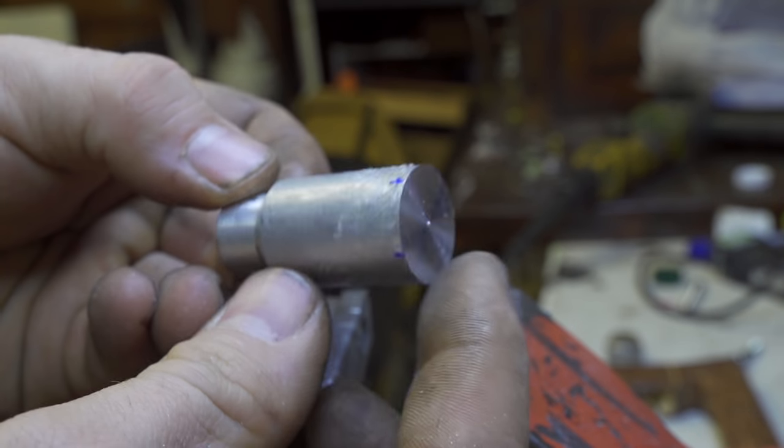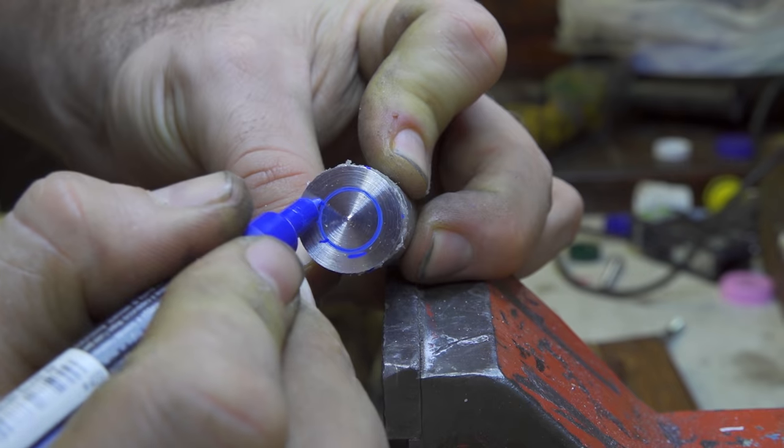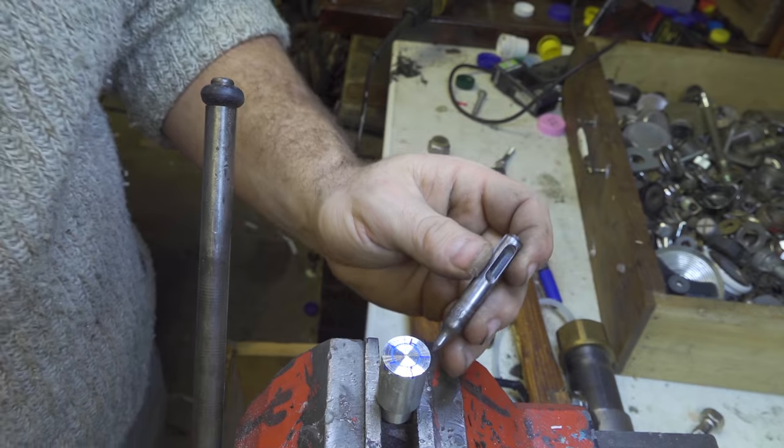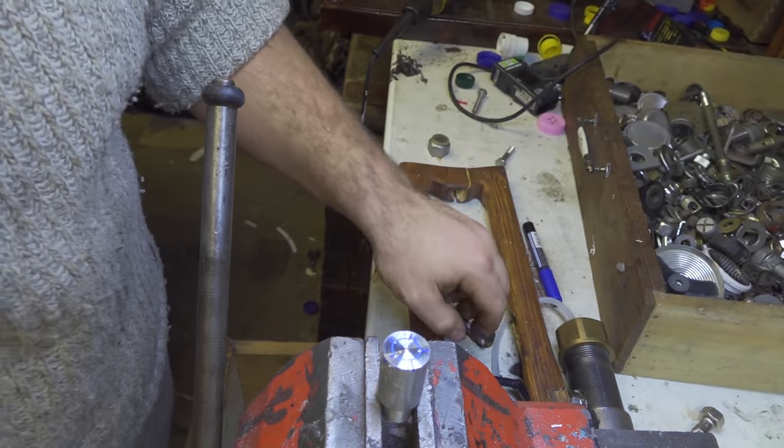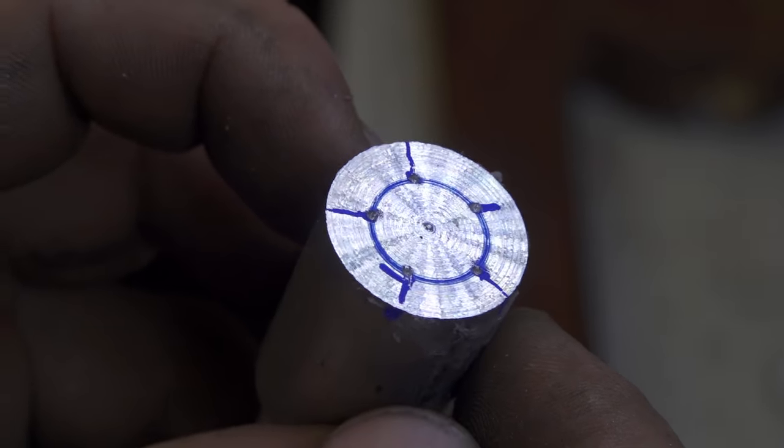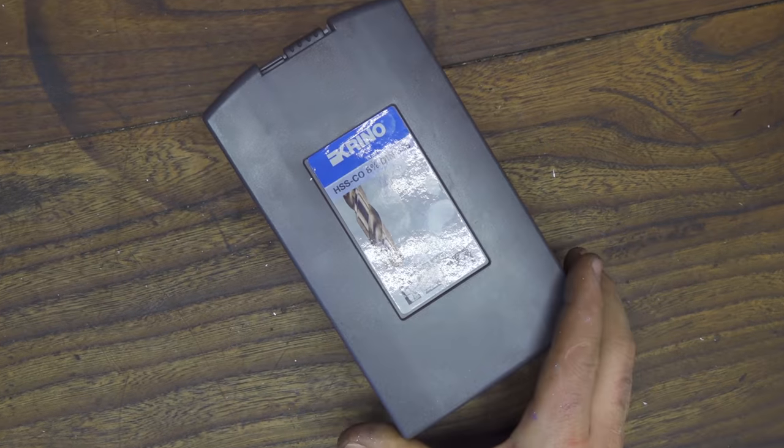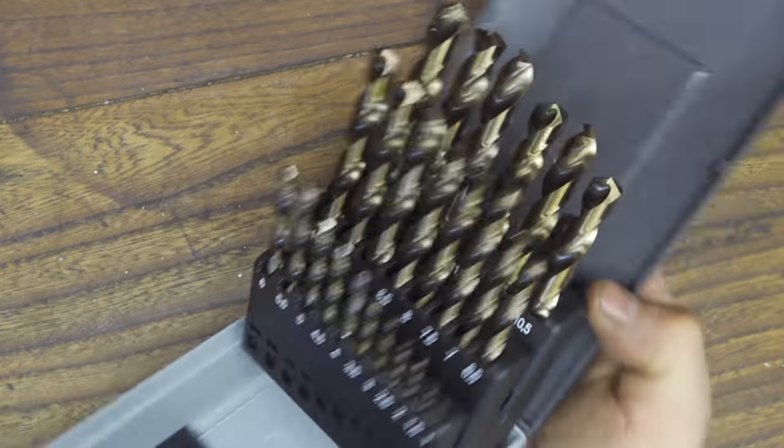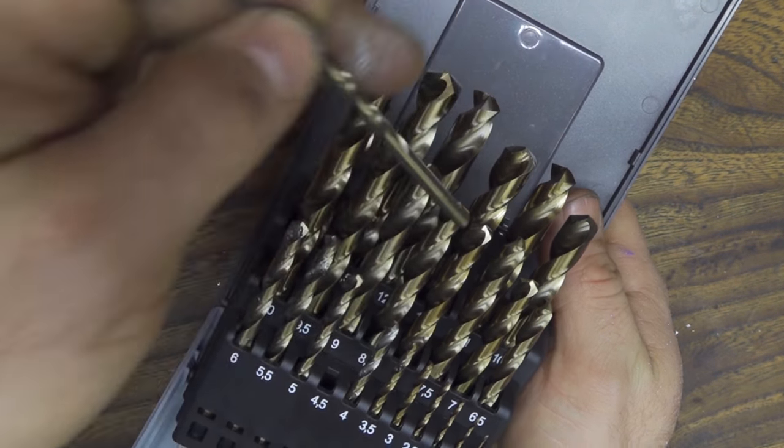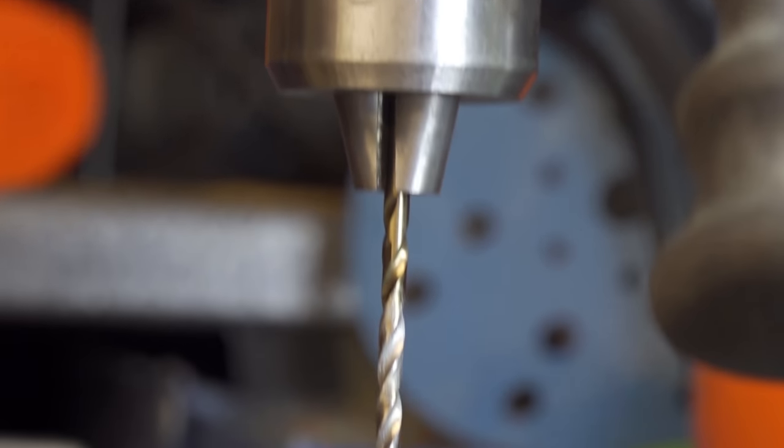So everything starts from this aluminum block. I need to divide in equal parts. I have to mark six points on top. And then I can use a punch and a hammer to mark all the points in a better way. And now I can choose some drill bits. In this case I'm going to use a 4.5mm wide drill bit. That is the right dimension to keep the holes not so big and not so small.